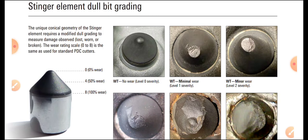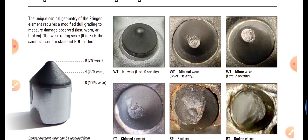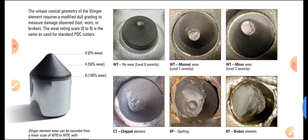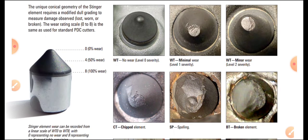Next are the Stringer wear classifications. WT indicates no wear — a fresh element. After that, minimal wear is Level 1 severity, and minor wear is Level 2 severity. CT stands for Chinned Element, SP for Spalling, and BT for Broken Element. These keywords allow you to directly identify what defect or damage has occurred to the stringer elements.